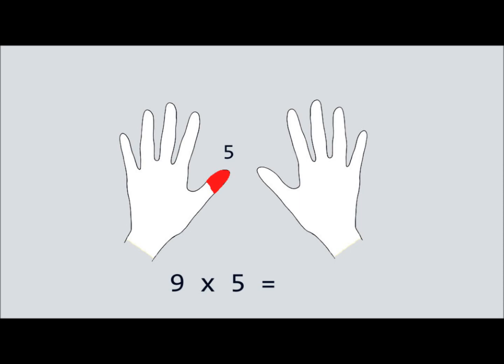Then we count the number of fingers to the left of the 5th finger. There are 4, so we put a 4 in the tens place. Next, we count how many fingers are to the right of the 5th finger. There are 5, so we put a 5 in the ones place. So our final answer is 45.